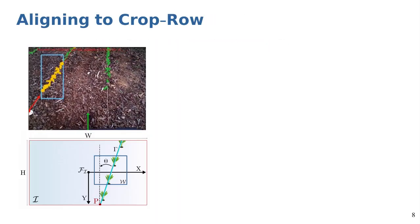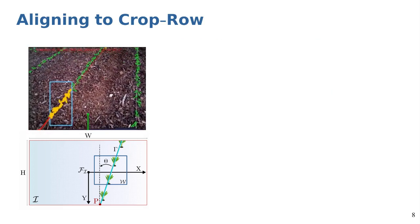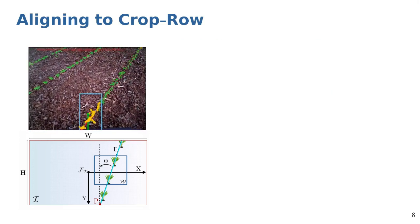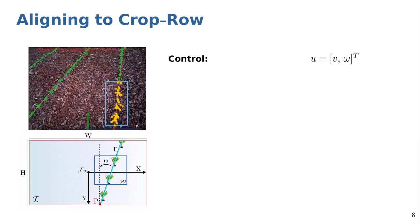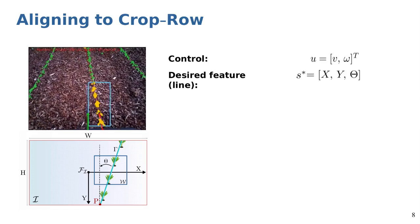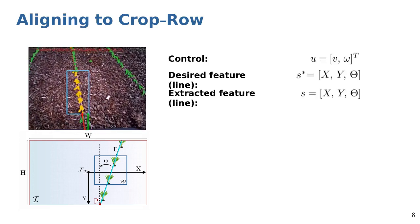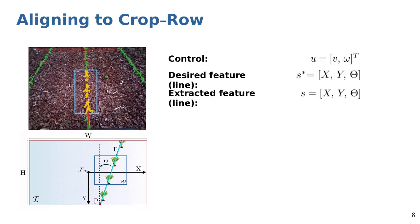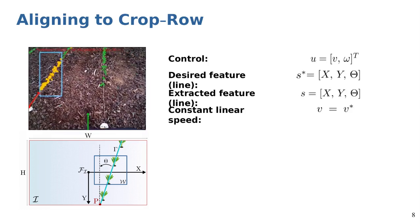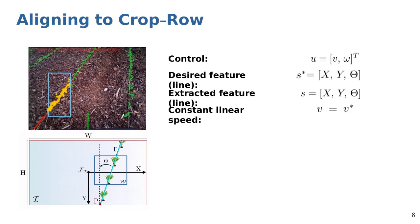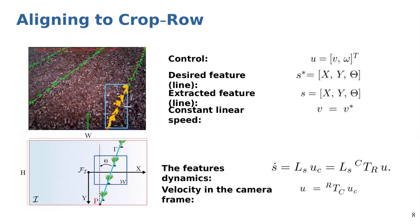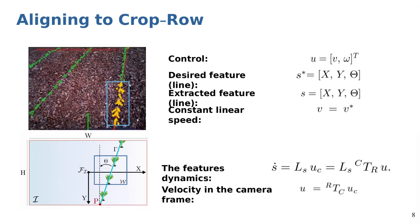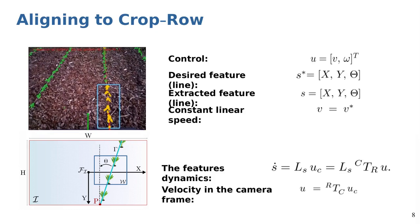We use visual servoing method to align the robot to the curve extracted from the desired crop row. This method computes control parameter u based on the error between desired features s* and extracted features s. We impose to keep linear velocity constant and only control angular velocity omega, which then the feature dynamics can be computed using interaction matrix and the map of the feature's movement from camera to the robot's frame.